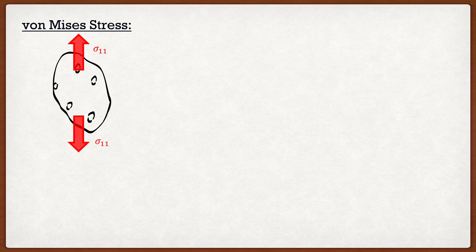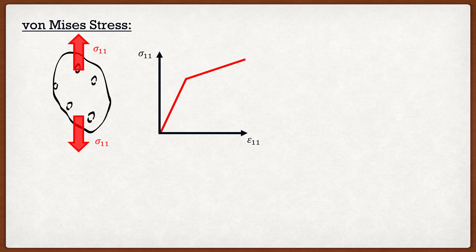We can measure the stresses and strains to get a good material model for this potato. As we can see, it goes up nice and linear, and then at a certain point it changes slope and has a secondary behavior. At a certain value of stress — which we call the yield stress — this potato changes behavior. Because of this yield stress, we can easily figure out when this change occurs.